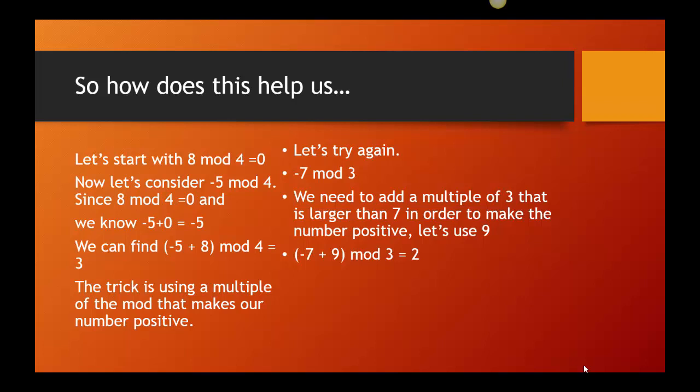When we answer mods, we never give negative numbers as our final answer. We should always go from 0 to 1 less than the mod. So, the trick is going to be using a multiple of the mod that makes our number positive. So, it's not just going to be like add the mod. You could add the mod over and over again until you get a positive number. That would be okay. But typically, we want to go a little faster than that.